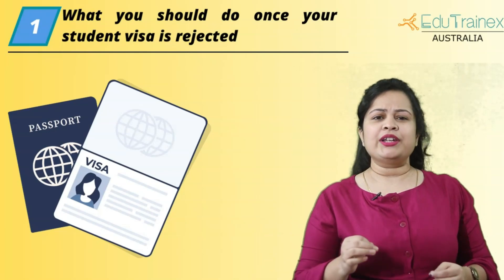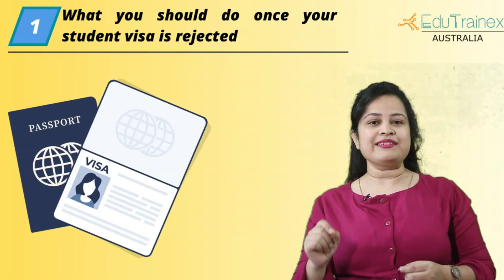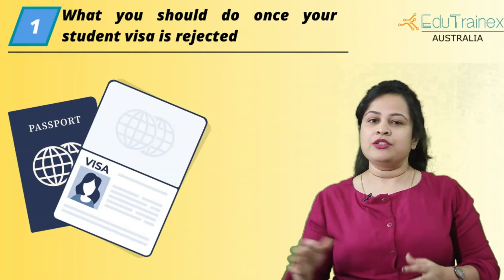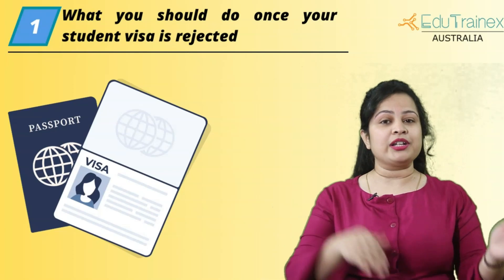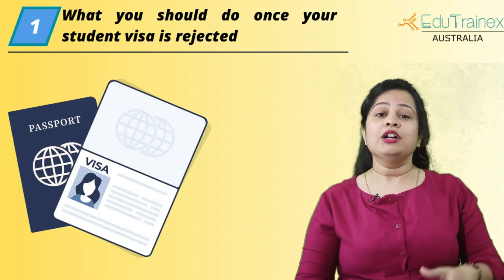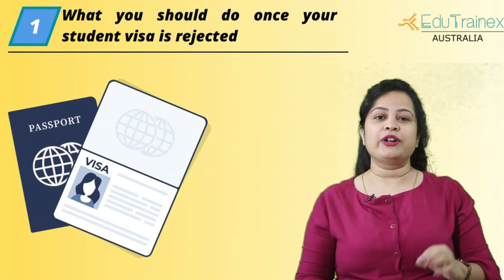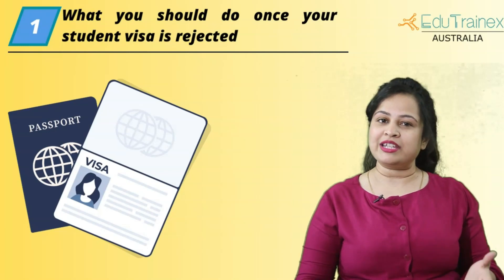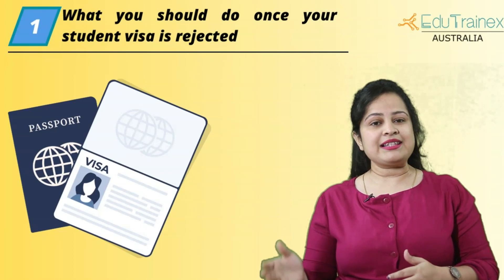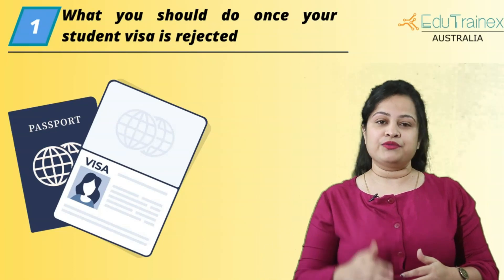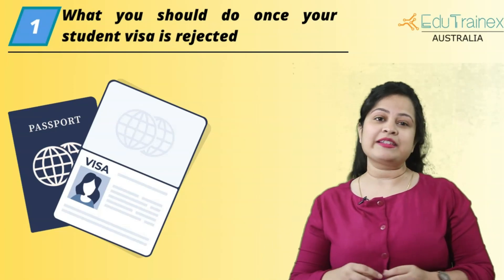Getting an Australia student visa is one of the most important steps while planning to study abroad. Every year more than 900,000 students move to Australia to pursue higher education. You should carefully examine the documents required, like the financial stability of around 20,000 Australian dollars, an acceptance letter from the university, and a minimum of 42 marks in PTE.